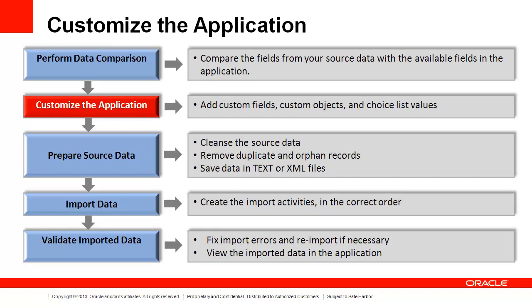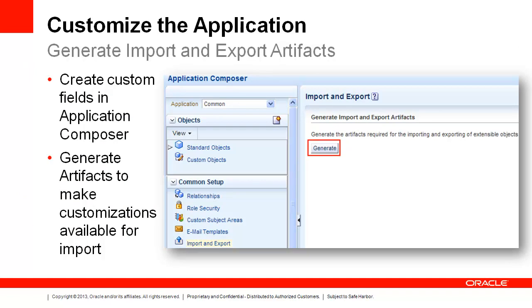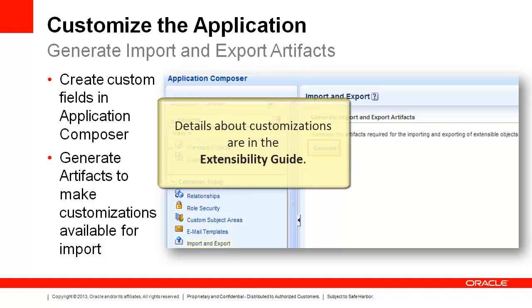Once you understand how the data is presented in the application, you may need to add custom fields, objects, or choice list values to meet your business needs. Customizations, like adding custom fields, are done in Application Composer. Details about customizations are in the Extensibility Guide. See the Additional Information segment to learn more about that resource.